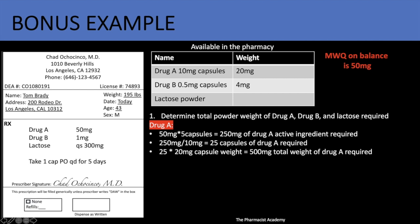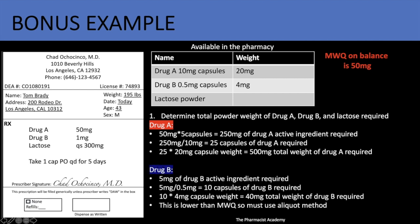For drug B, we need 5 milligrams of active ingredient — 1 milligram per capsule times five capsules. Drug B is supplied as 0.5 milligram capsules, so we need 10 capsules of drug B. Ten capsules times a capsule weight of 4 milligrams gives 40 milligrams total weight of drug B. As you can see, this is lower than the MWQ of 50 milligrams, so we must use the aliquot method.